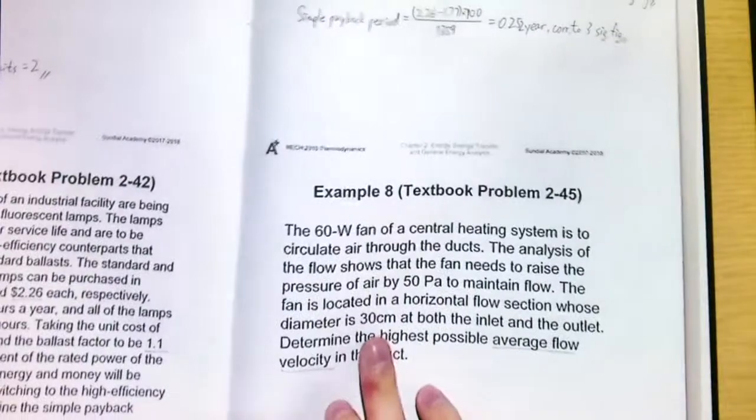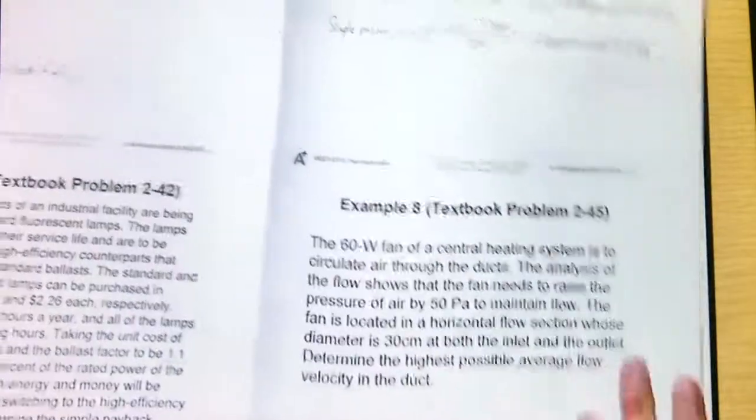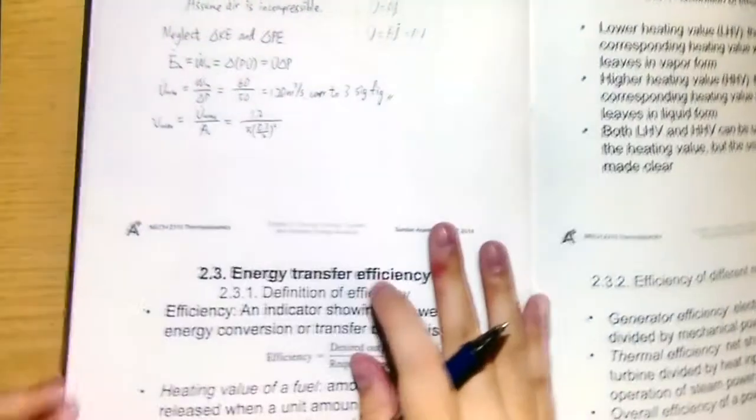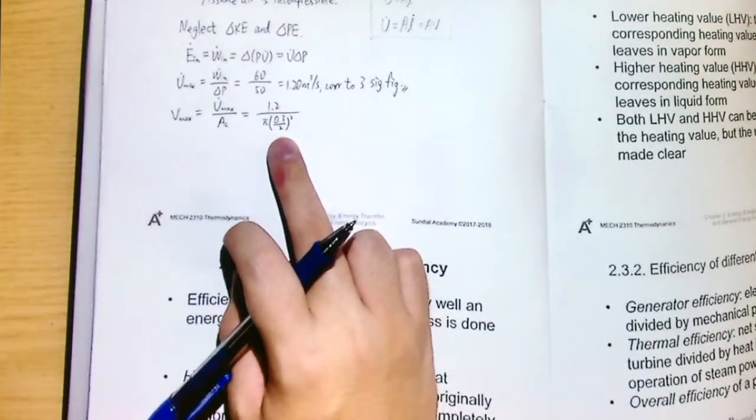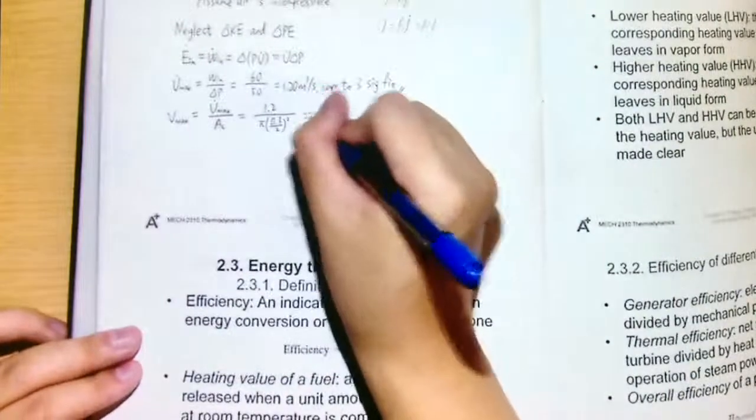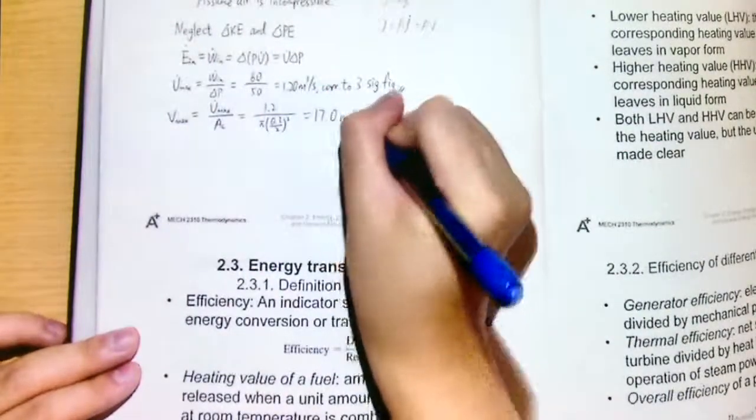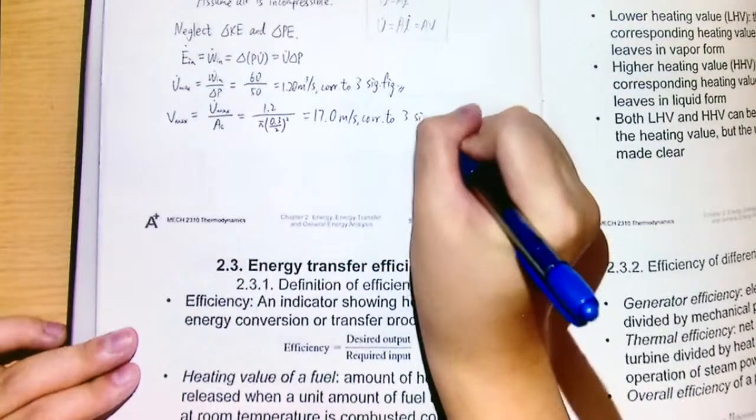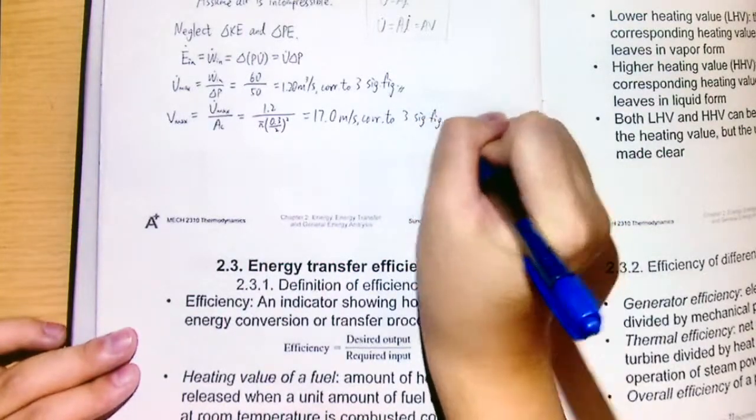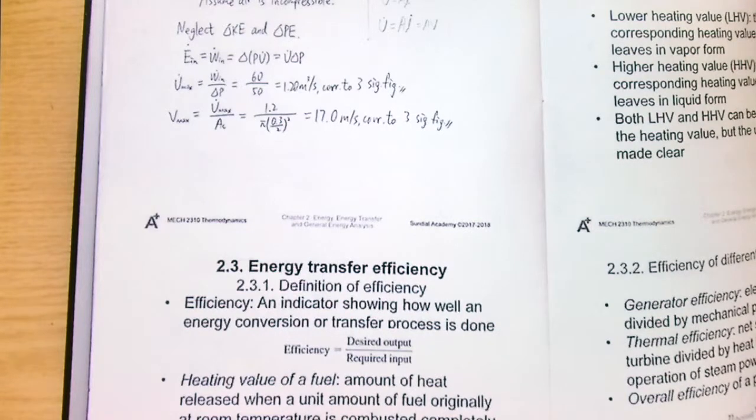So that this one becomes 1.2 divided by pi times 0.3 divided by 2 squared, because it's 30 cm. So 30 cm is equal to 0.3 m, and we need to divide it by 2 to get the radius. And use a calculator, you will find that it will become this one, and correct to 3 significant figures.